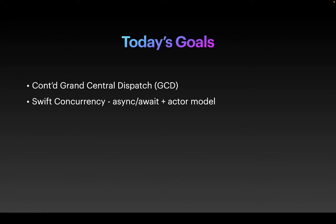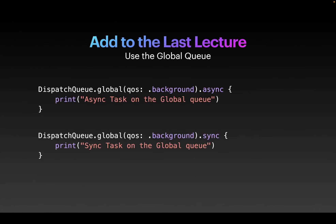Today we're still talking about Grand Central Dispatch — there are a few comments from the previous lecture — and we're going to start on Swift concurrency, which is the async/await syntax. We might go over the actor model next lecture. Let's review a concept from last lecture: when we discussed the global queue, I showed you a function to submit tasks to the global queue using something like performConcurrent.